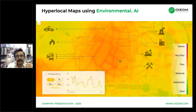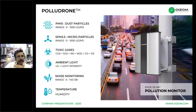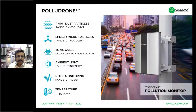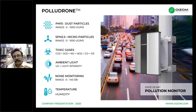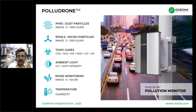A robust monitoring network is necessary to monitor pollutants. The Polludrone can measure particulate matter — PM10 and PM2.5 — along with carbon monoxide, NO, NO2, SO2, light intensity, noise, and weather parameters. Let's look at the versions we offer.